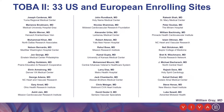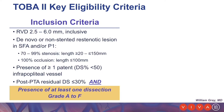I want to give thanks to all 33 sites across Europe and the U.S., which enrolled incredibly well and are the primary reason we're able to share these excellent results today. The key eligibility criteria include: reference vessel diameter between 2.5 and 6 mm inclusive; de novo or non-stented restenotic lesions in the SFA or proximal popliteal artery; lesion lengths of 20 to 150 mm for 70–99% stenoses; less than 10 cm for 100% occlusions; at least one patent infrapopliteal vessel; post-PTA residual of less than or equal to 30%; and the presence of at least one dissection of any grade A through F.